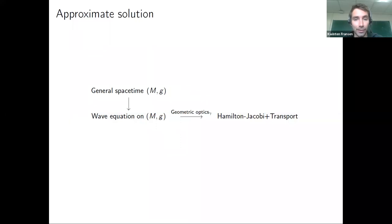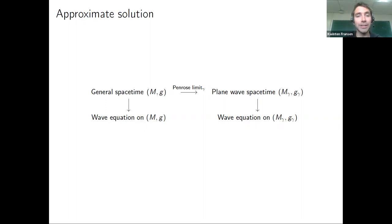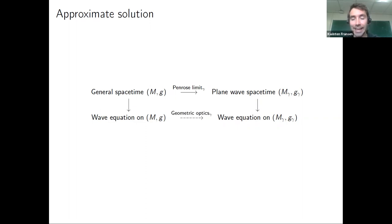The idea is to understand this from a more spacetime perspective. If I give you a null geodesic — one of these leading-order solutions to the Hamilton-Jacobi equation — there is a procedure by Penrose known as the Penrose limit, which gives you from this null geodesic a plane wave spacetime. This captures, at least to first sub-leading order, the geometric optics approximation and provides a spacetime perspective on it.